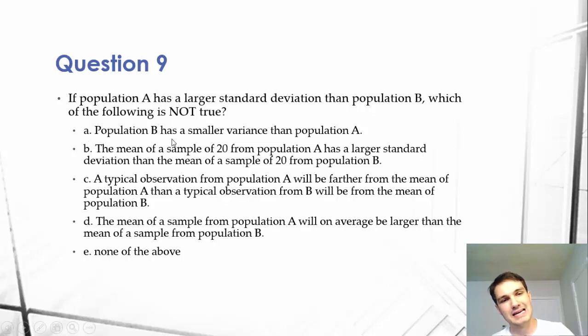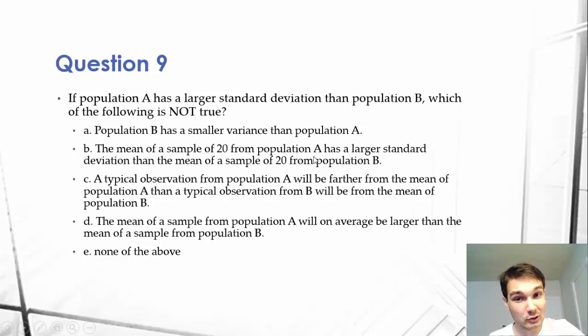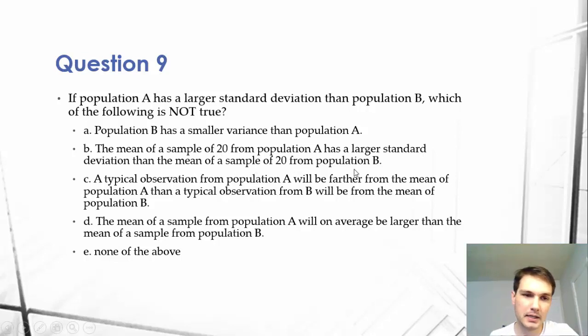A: Population B has a smaller variance than population A. B: The mean of a sample of 20 from population A has a larger standard deviation than the mean of a sample of 20 from population B.